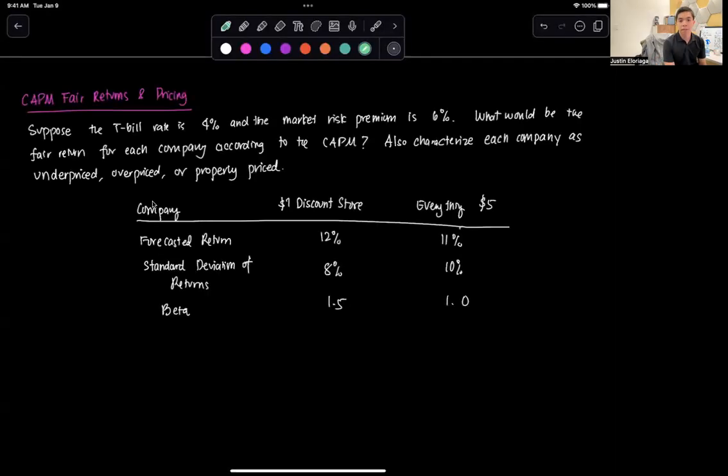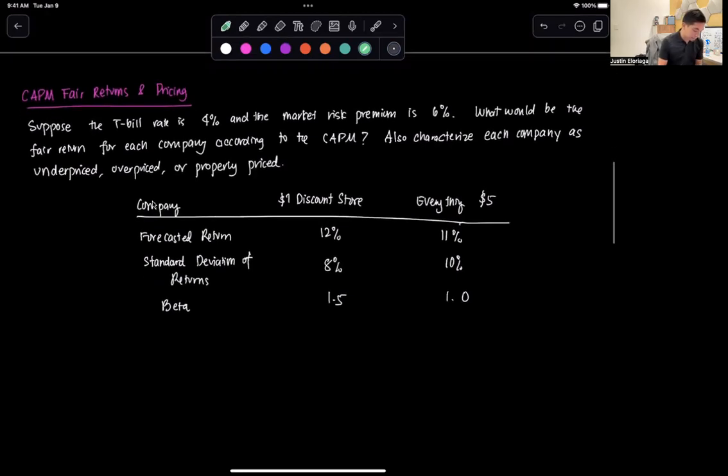Hi everyone and welcome to this particular video on the Capital Asset Pricing Model, in which we're going to discuss this concept of whether or not something is overpriced, underpriced, or properly priced, as well as computing for the expected return based on CAPM. So consider this problem that we have. Suppose we have a T-bill rate that is 4%. A T-bill is risk-free, so of course this represents a risk-free rate, and we have that the market premium is 6%.